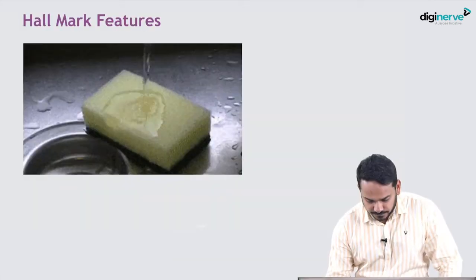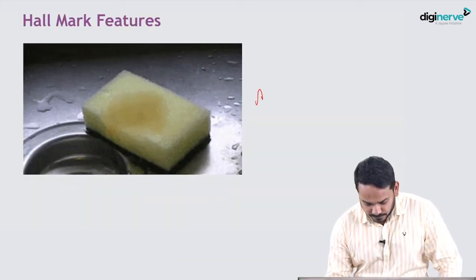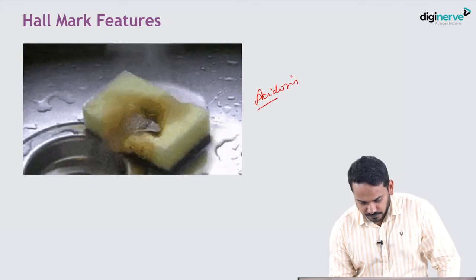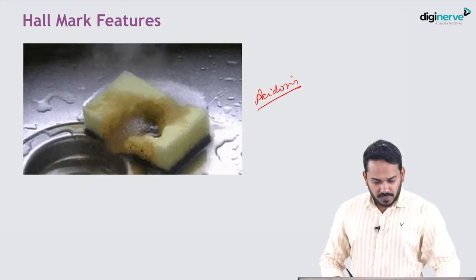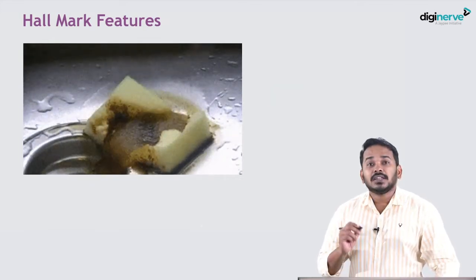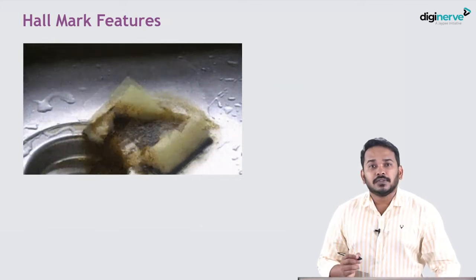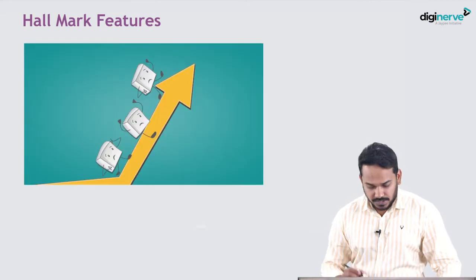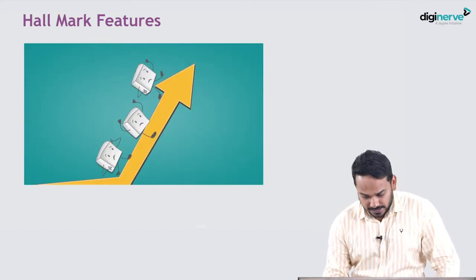The second hallmark feature of diabetic ketoacidosis is acidosis, and the third feature is hyperglycemia.